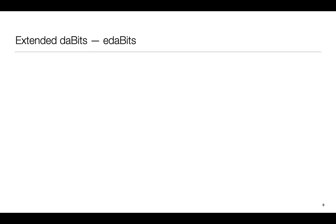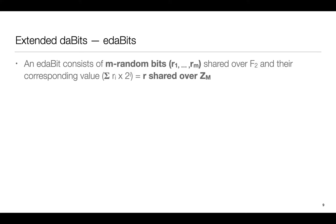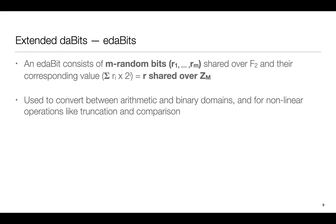Taking inspiration from DABITS we propose extended DABITS called EDABITS. Instead of one bit being shared in both the domains an EDABIT is M random bits shared in F2 and the corresponding value shared in ZM where M is either a prime order field or a ring. Similar to DABITS, EDABITS can be used to convert between arithmetic and binary domains. They can be used for any corruption setting but we observe the most gain for the dishonest majority setting.